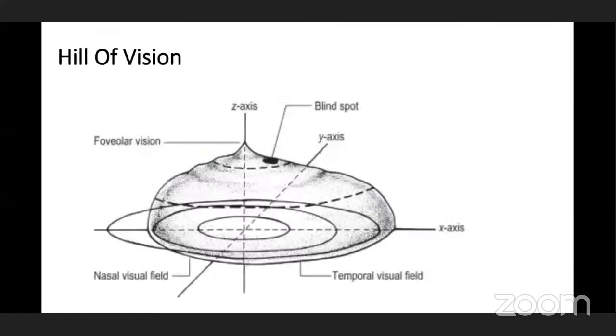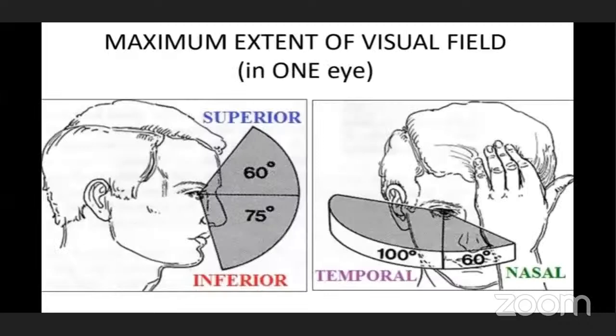Then we have the island of vision. At the peak is known as the foveal region, where there is the highest vision at the fovea and it decreases peripherally. The maximum extent of visual field in one eye: superiorly 60 degrees, inferiorly 75 degrees, temporally 100 degrees, and nasally 60 degrees.